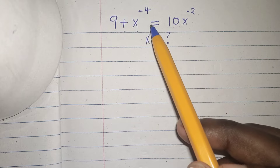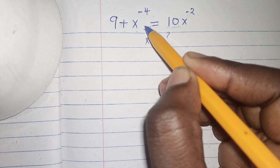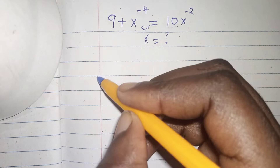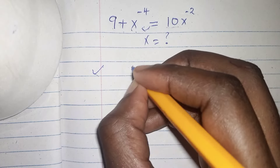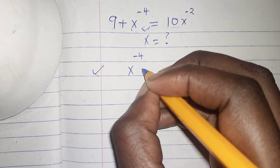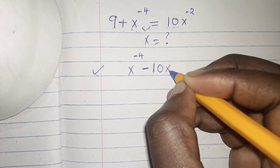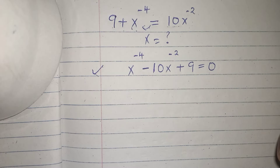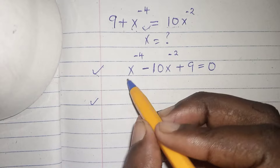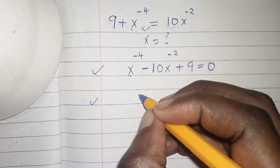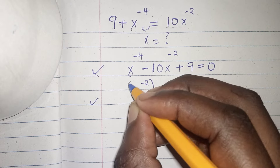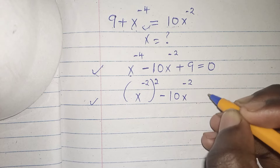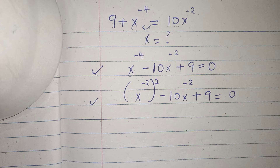Our first step will begin by bringing this term to our left hand side, so we shall rearrange everything and equate it with 0. We begin with x to the power of negative 4 minus 10x to the power of negative 2 plus 9 is equals to 0. Next, x to the power of negative 4 can be written as x to the power of negative 2, all squared, minus 10x to the power of negative 2 plus 9 is equals to 0.